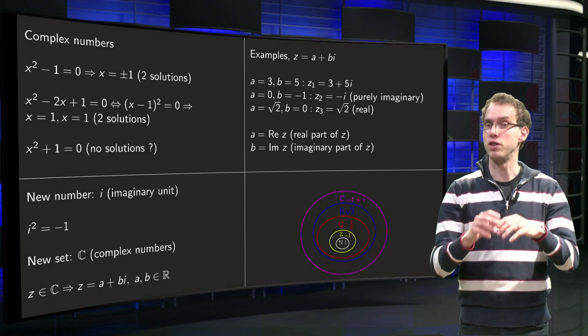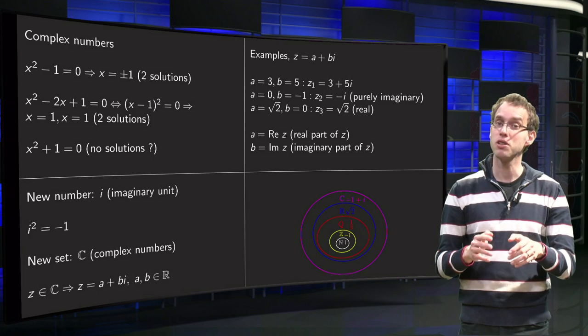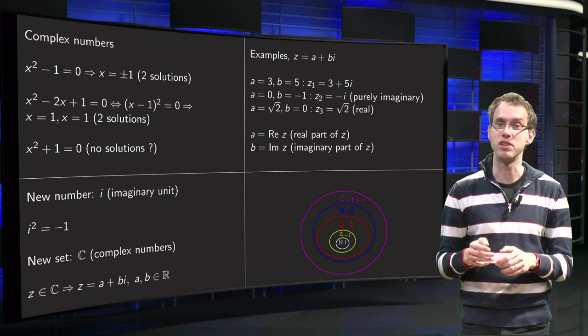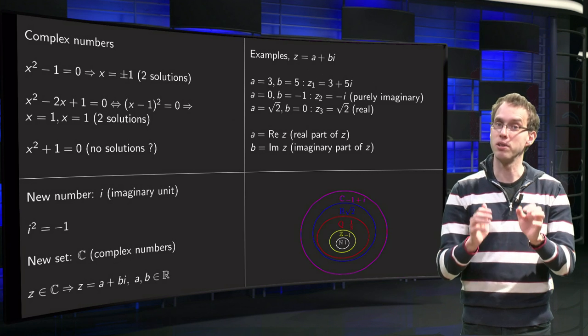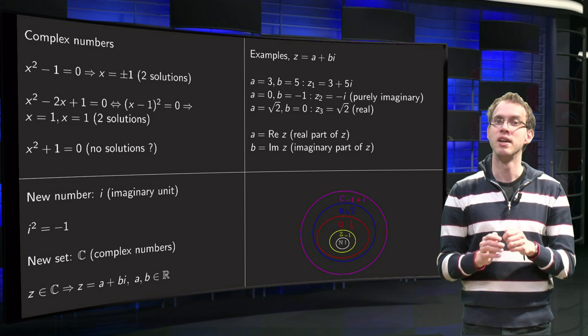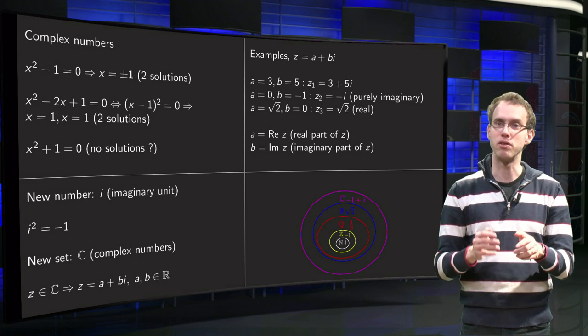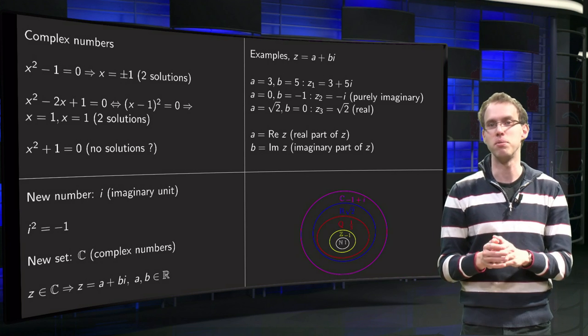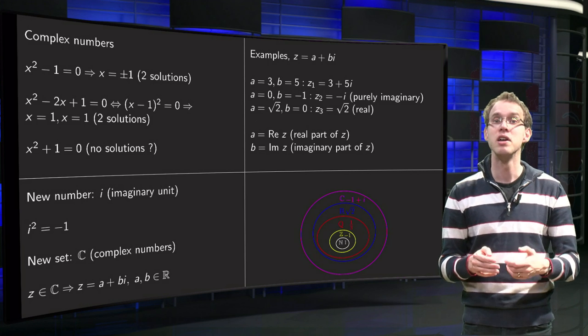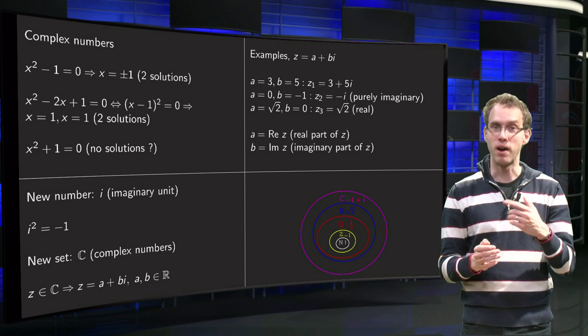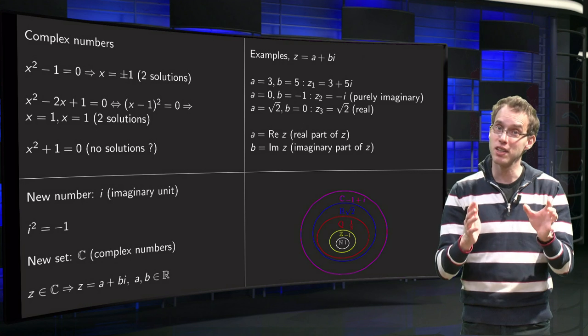Well, when we started a long time ago with numbers, you started counting like 1, 2, 3, 4, etc., we added the number 0 and you get the set of natural numbers. Then you start subtracting numbers, you get 4 minus 3 equals 1 is fine, but when you try 3 minus 4, that doesn't work, so you added the negative numbers, minus 1, minus 2, minus 3, and you get the set Z.